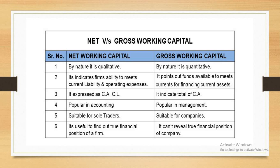Gross working capital only consists of the trading account — it does not cover the profit and loss account or balance sheet. Unless we make a profit and loss account, we will not know the real position of the firm. Net working capital goes through gross profit via the trading account, then net profit through the profit and loss account, which then comes into the balance sheet. That's why gross working capital doesn't reveal the true financial position.